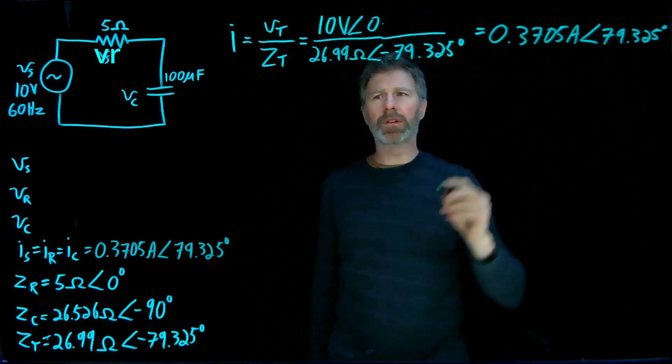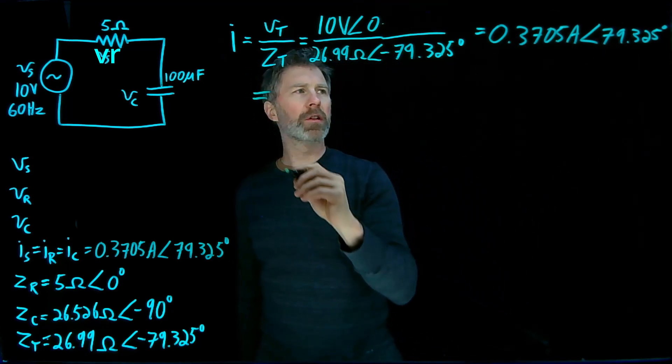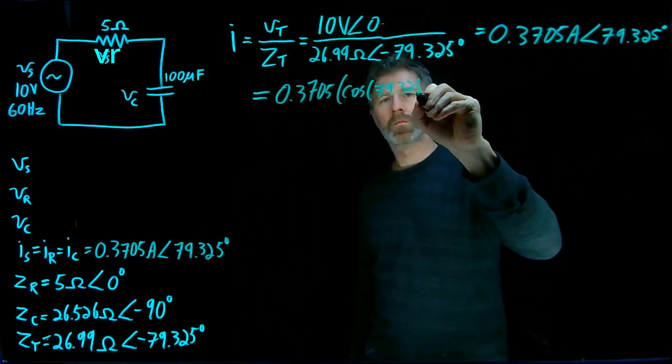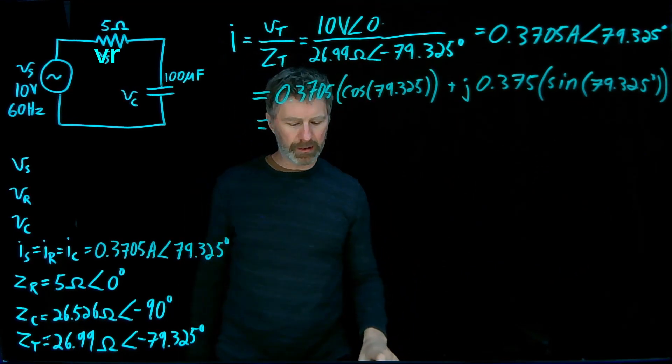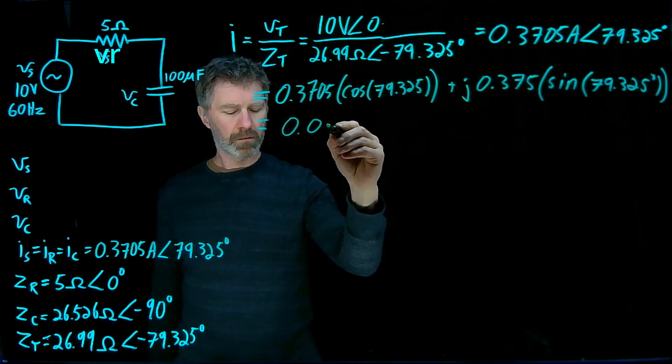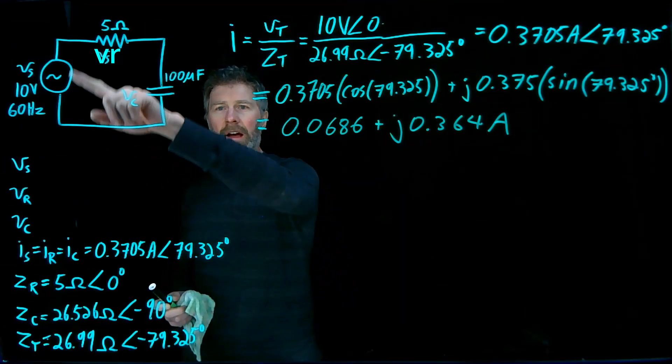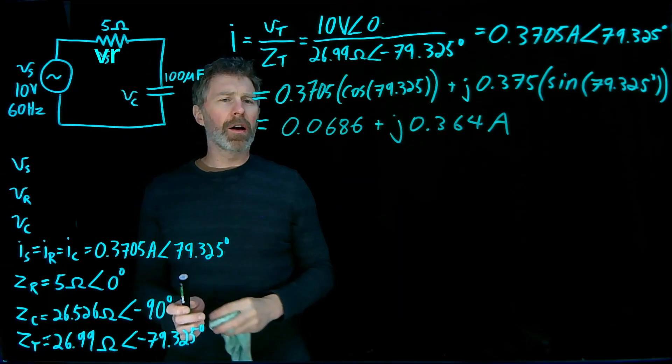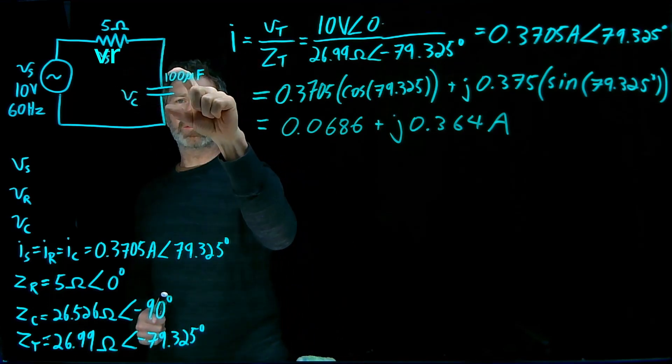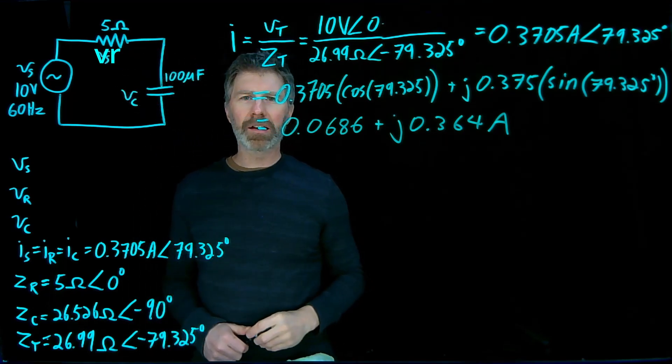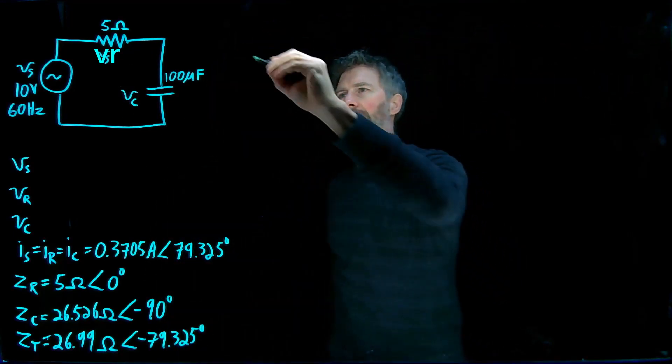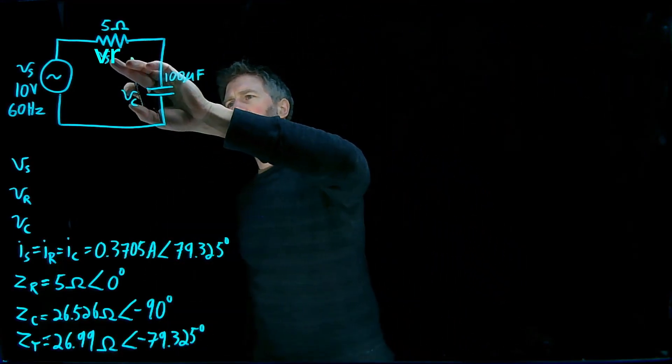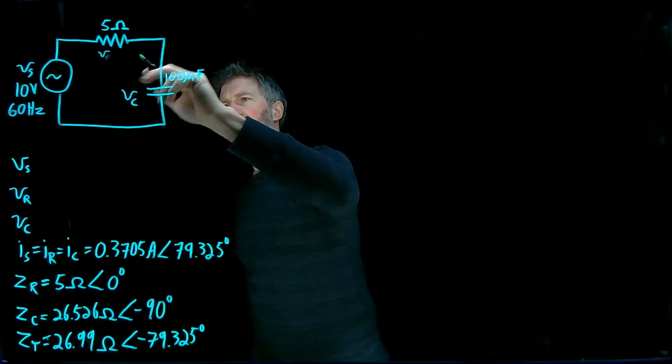So that is the current for all three of those components. I can do this number in rectangular coordinates as well. If I plug that into a calculator, I get... Okay, now that I have the current through the circuit, I can figure out the voltage across these two components using that AC equivalent of Ohm's law, the current times the impedance. Oh, I said Vs here, this should be Vr. What a silly man I am.